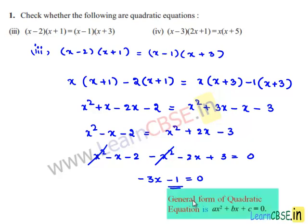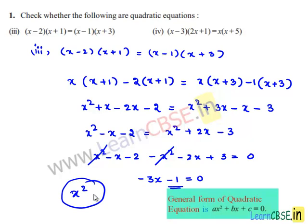We know that the general form of a quadratic equation is ax squared plus bx plus c equals 0. But the final equation obtained is minus 3x minus 1 equals 0 — we do not have any x squared term. Since x squared is missing in this equation, we can say that the given equation is not a quadratic equation.